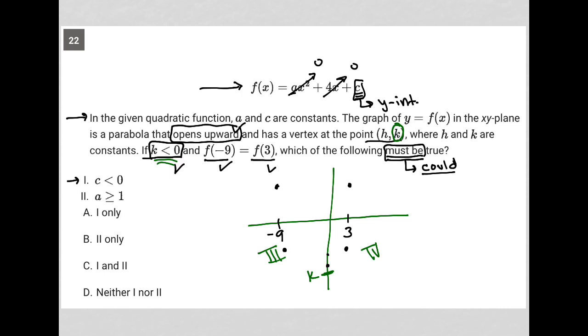So option 1 is saying that c has to be a negative number, below the x-axis. Is that true? I don't think so. Obviously it could be true, but what would be wrong with c being a positive number? Couldn't everything else about this parabola still be true if c were positive? Yeah, I could still have a k value that's negative. I could still have f(-9) equaling f(3). There's nothing else that would change. So I don't like option 1.